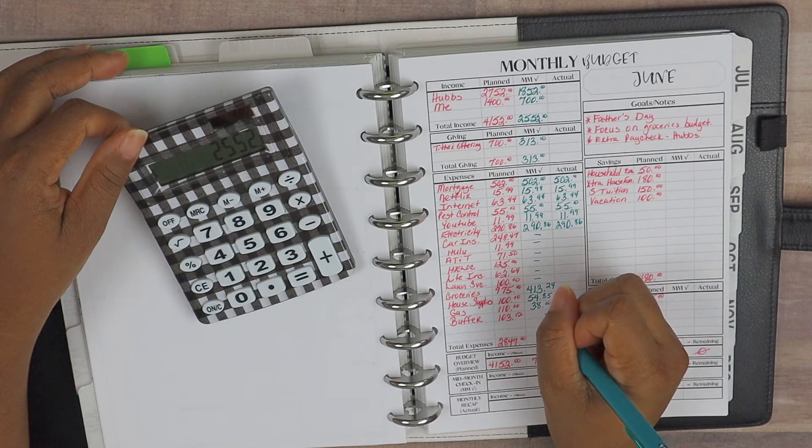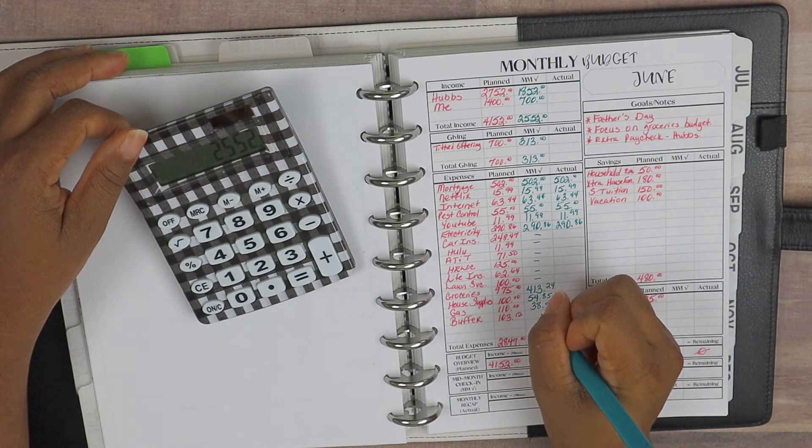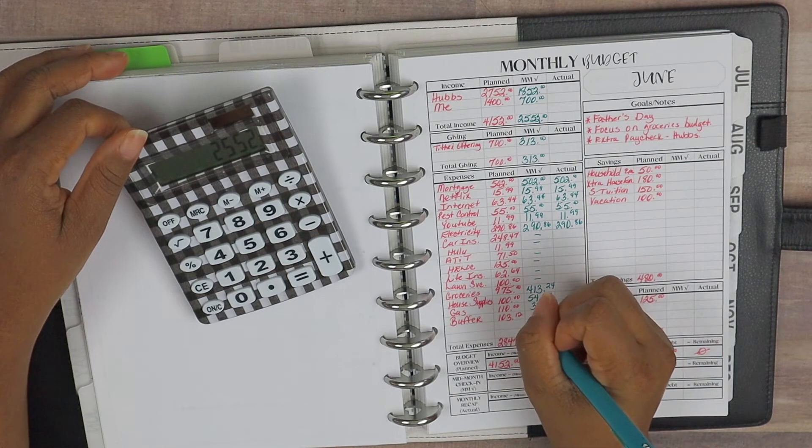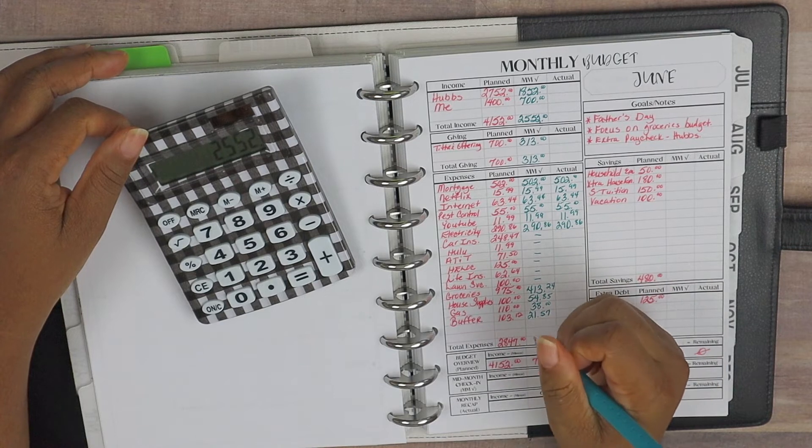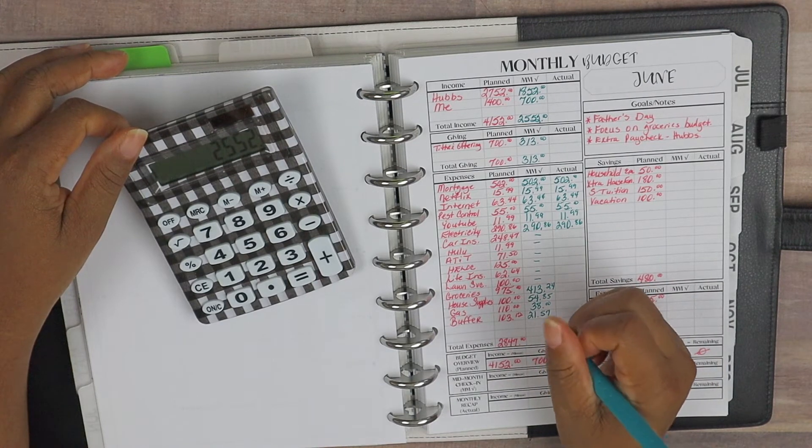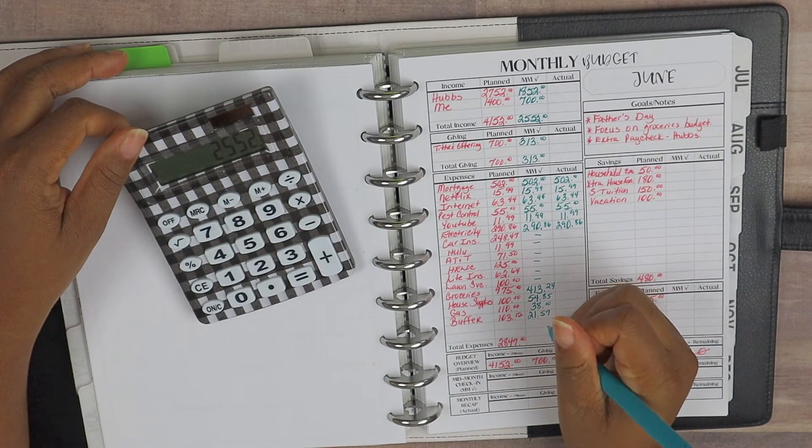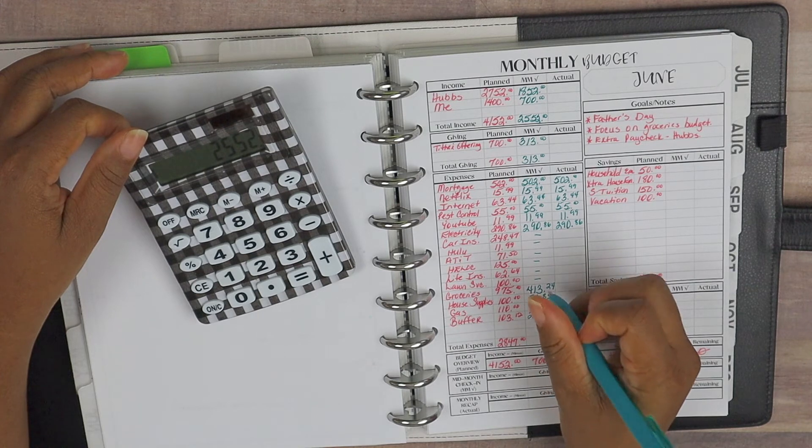Our gas—we've taken care of gas for me and it has come in at $38, so we are doing pretty good there as well. And then the buffer, I did spend $21.57. Our clothes steamer went out, so I ordered a hand steamer from Amazon, and of course that was not planned. It wasn't part of the budget, so we just took it out of the buffer.